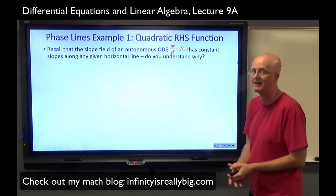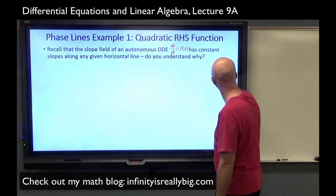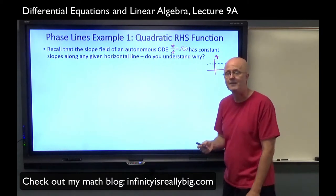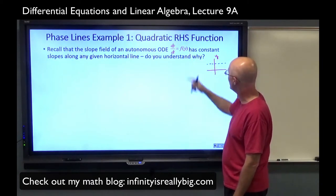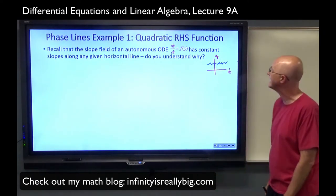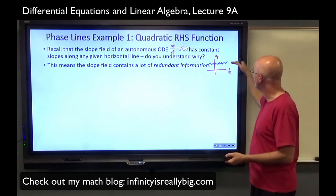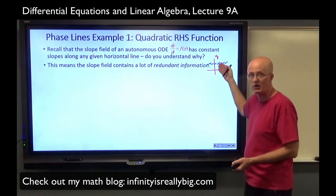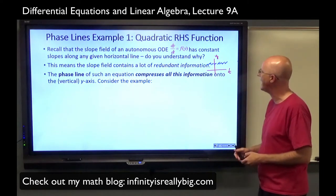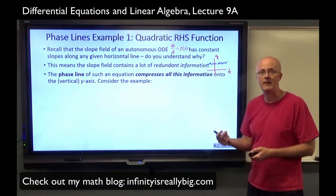Recall that the slope field in an autonomous ODE, dy/dt equals f of y, has constant slopes along any horizontal line. That's because the right-hand side function only depends on y. When you make the slope field in the ty-plane and look at a horizontal line, that's at a constant value of y. Plug in any point along such a horizontal line into the right-hand side function, you'll get a constant value — the same as the slope of the little tangent lines. This means the slope field contains a lot of redundant information. We can compress all that information onto the vertical y-axis to give us the idea of a phase line.